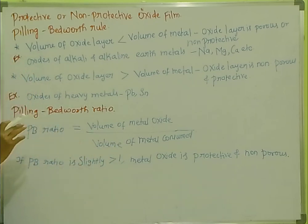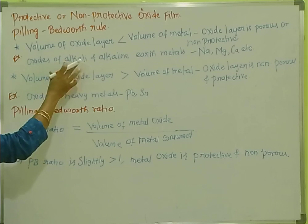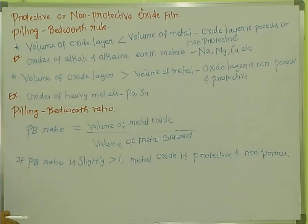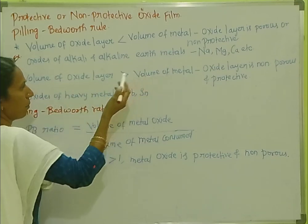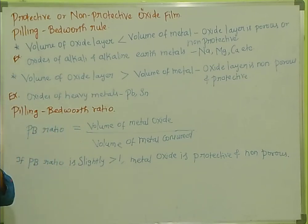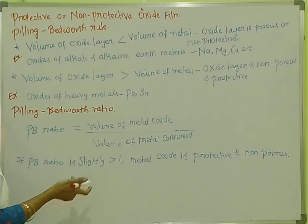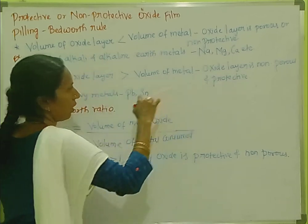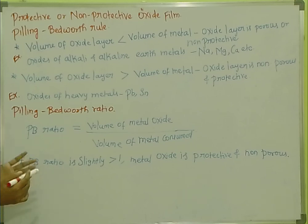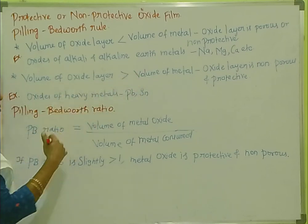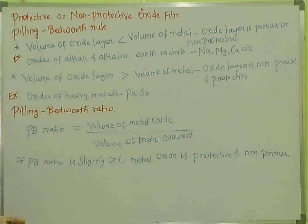For alkali and alkaline earth metals, the volume of the oxide layer is less than the volume of the metal. When the volume of the oxide layer is less than the volume of the metal, the oxide layer is non-porous and non-protective. So further oxidation is possible, causing corrosion. Here the oxide layer volume is less than the metal volume — non-protective.